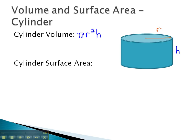If we wanted to find the surface area, we'll use the formula 2πrh plus 2πr squared.